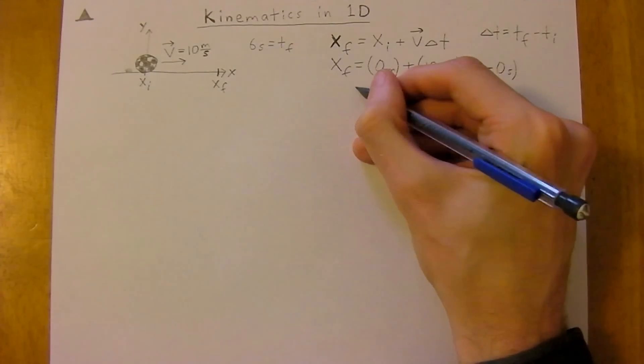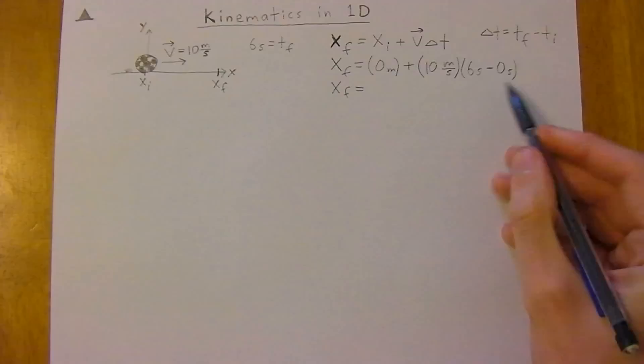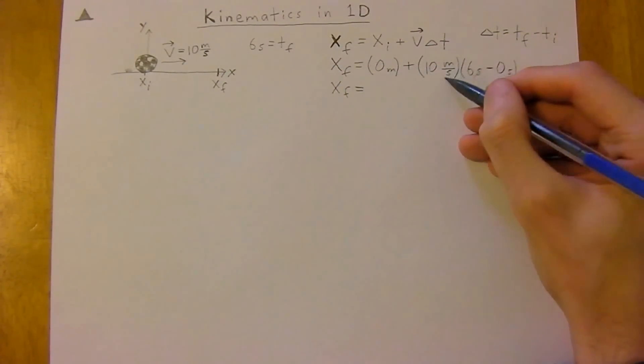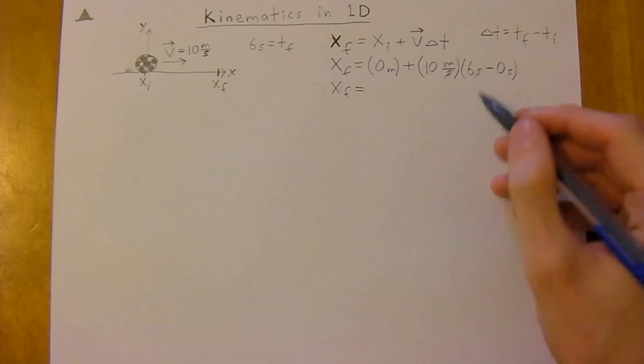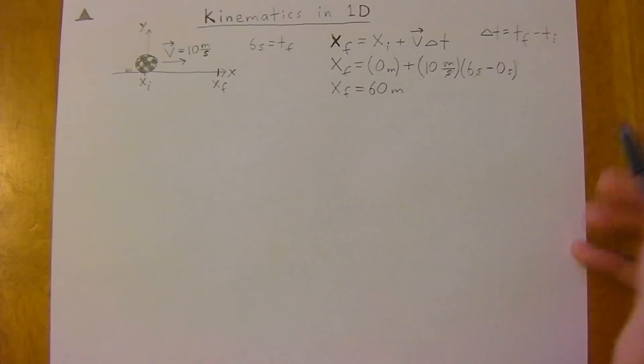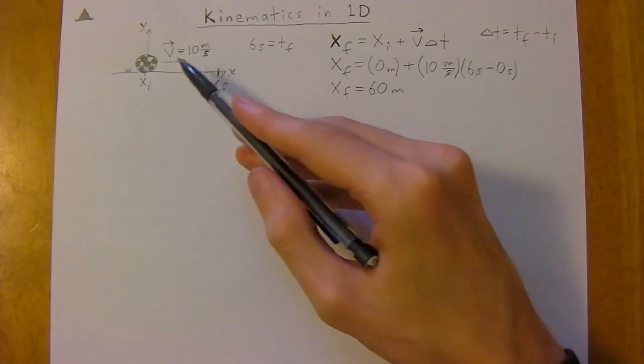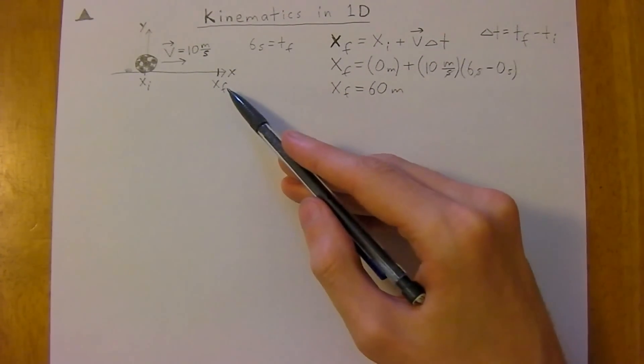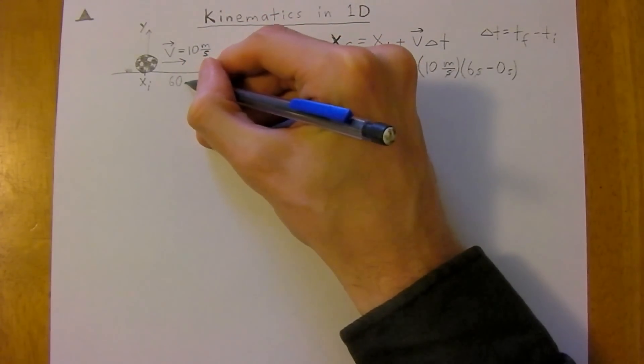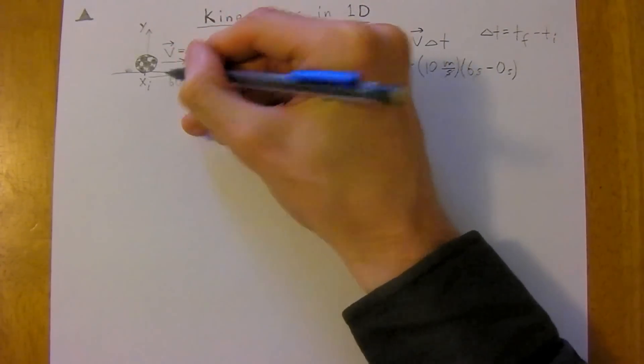So, the x-final is going to be equal to, well, seconds are going to cancel here, leaving us with units of meters, so 10 times 6, or 60 meters. So after six seconds with 10 meters per second velocity, it will have traveled 60 meters, and that is this distance here.